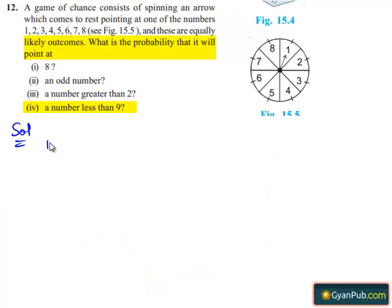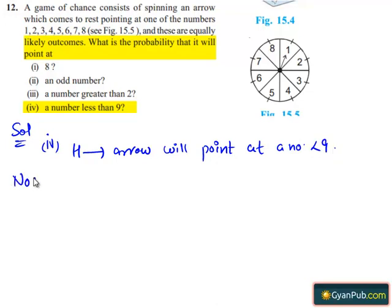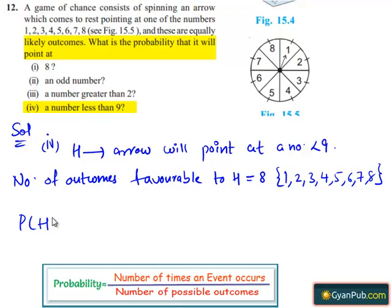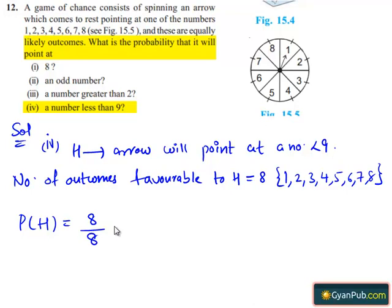Now moving on to the fourth part. Let H be the event that the arrow will point at a number less than 9. The number of outcomes favorable to event H equals 8, which are 1, 2, 3, 4, 5, 6, 7, and 8. The total number of outcomes equals 8. Then P(H) equals 8 divided by 8, which equals 1. So H is a sure event or certain event.